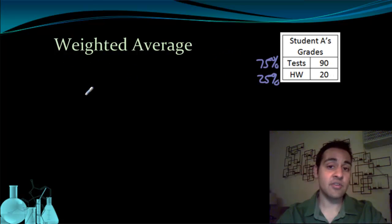So mathematically, let's look at what this is. The first thing I do is take the tests, which is a 90, and multiply that by the percentage worth that tests are. Remember, when you multiply by a percent, you change it to a decimal. So you have 90 times 0.75. That's my term for the test portion of the grade.